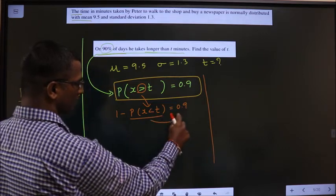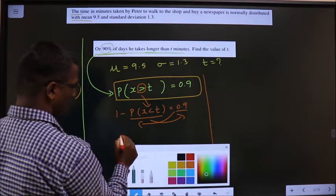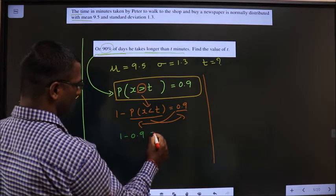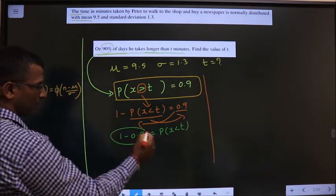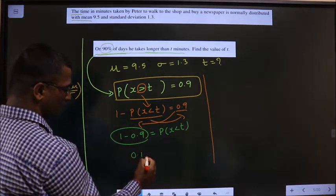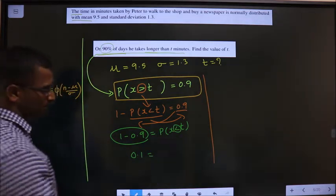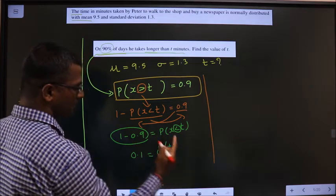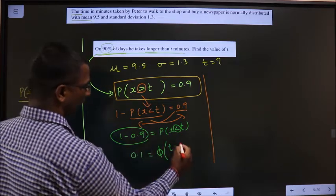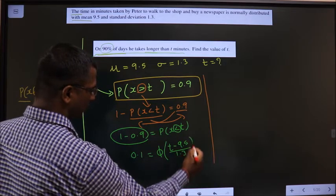Next, shift this to this side and this over here. So, 1 minus 0.9 equal to P of X less than T. Now, 1 minus 0.9 is 0.1. Here the symbol is less than. So, phi will come. T minus mean 9.5 by standard deviation 1.3.